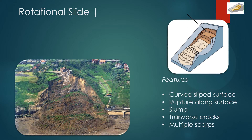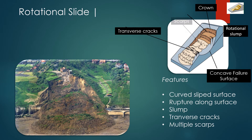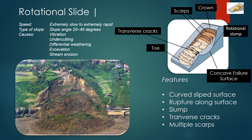A rotational slide is a slide in which the surface of rupture is curved concavely upward, and the slide movement is roughly rotational about an axis that is parallel to the ground surface and transverse across the slide. The speed for rotational slides is extremely slow to extremely rapid. The type of slope is a slope angle of around 20 to 40 degrees. The causes can be many, for example vibration, undercutting, differential weathering, excavation or stream erosion.